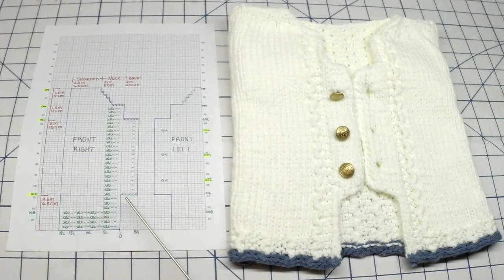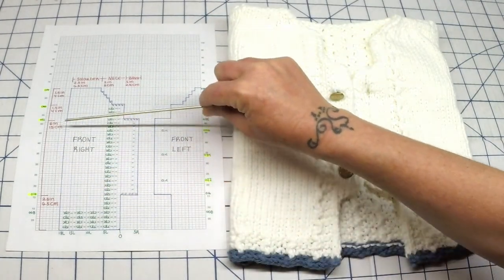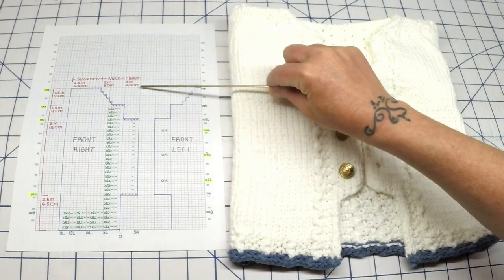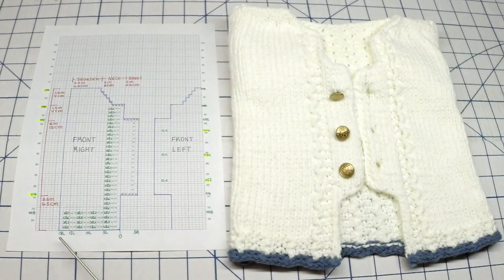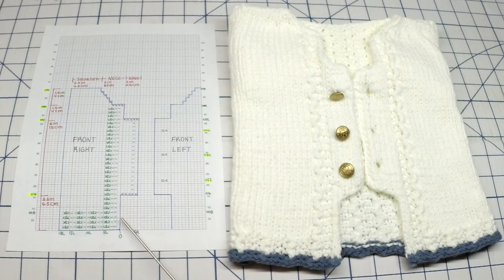If your stitch and row gauge is similar to mine you should be able to arrive to the same measurements that I have. If it's slightly different you may have to modify the numbers of stitches to cast on or the numbers of rows to knit, and you will find my gauges in the description below.